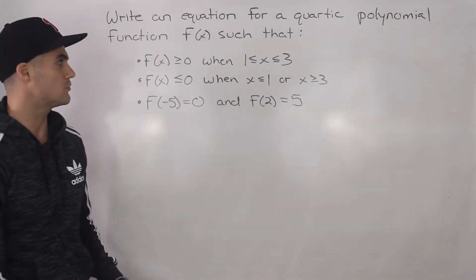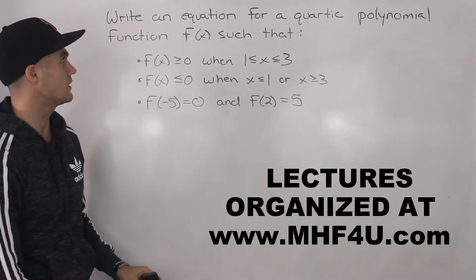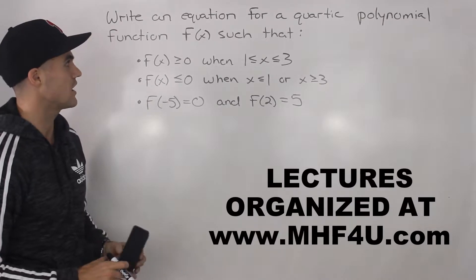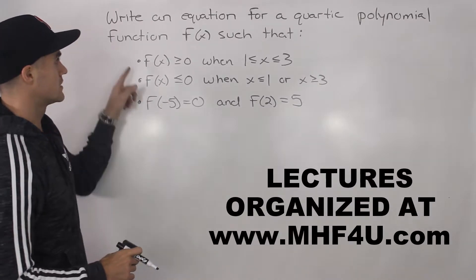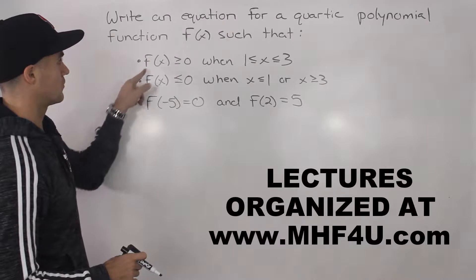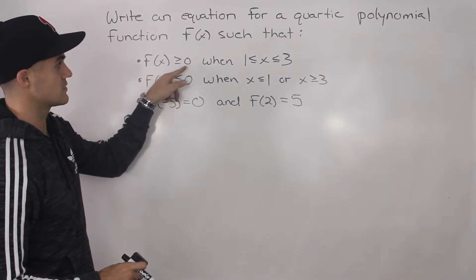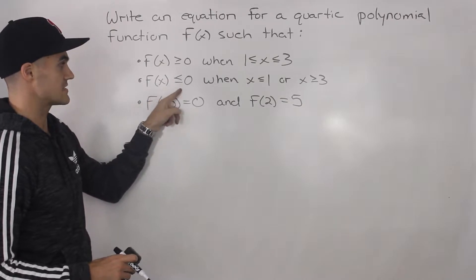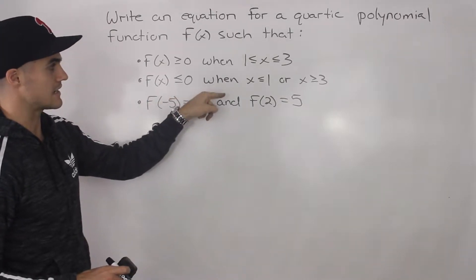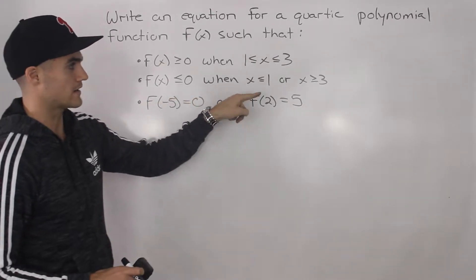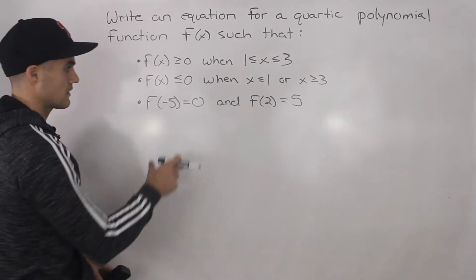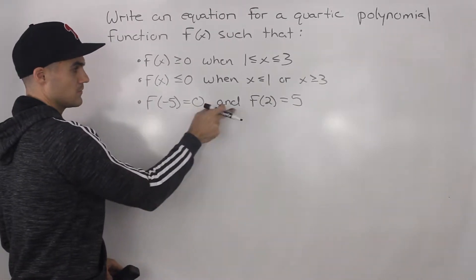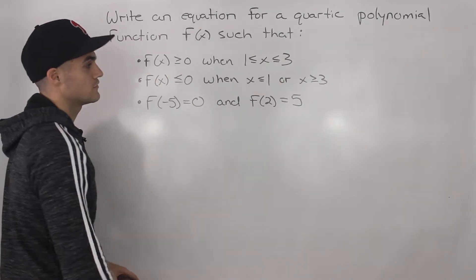Welcome back everybody, Patrick here. Moving on to another question. We have to write an equation for a quartic polynomial function f of x such that these conditions hold: f of x is greater than or equal to zero when x is between one and three, f of x is less than or equal to zero when x is less than one or x is greater than three, f of negative five equals zero, and f of two equals five.